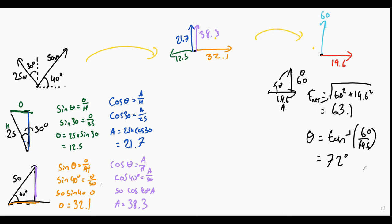Rounded up but that's fine. So we can make one final alteration to get our answer: 63.1 newtons at 72 degrees.